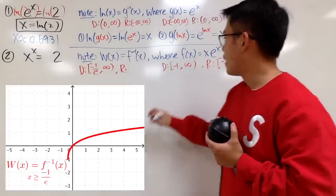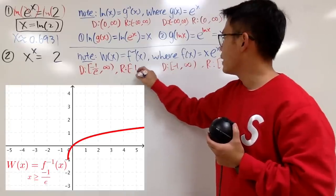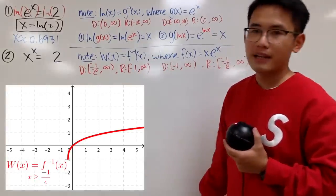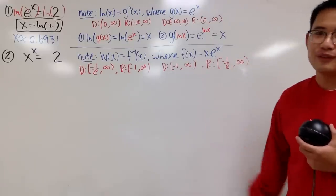And then this will be the range of the Lambert W function, so let's put that down right here. R is negative 1 to infinity, like that. And pay attention to these kind of things for your own good, of course.